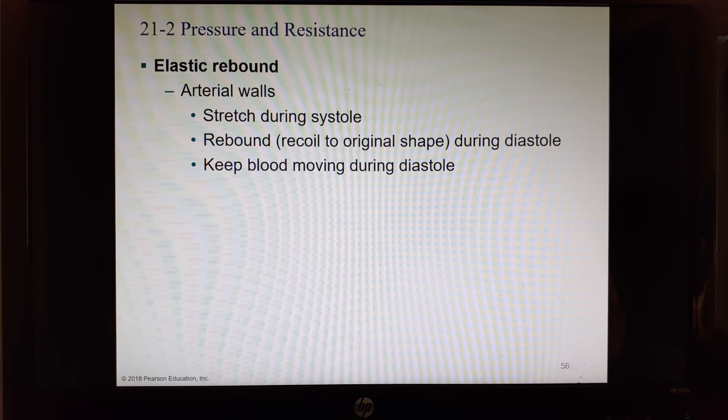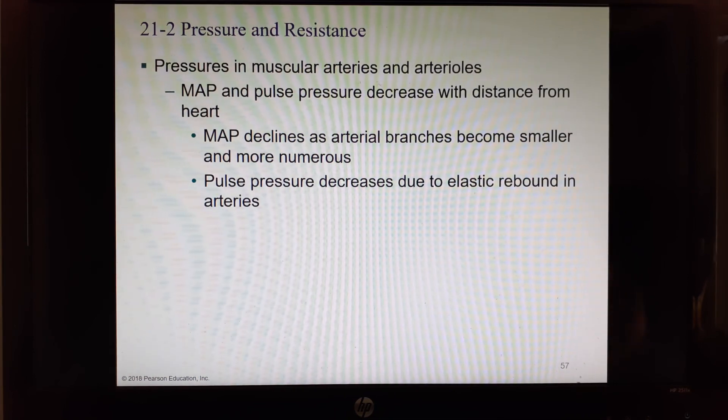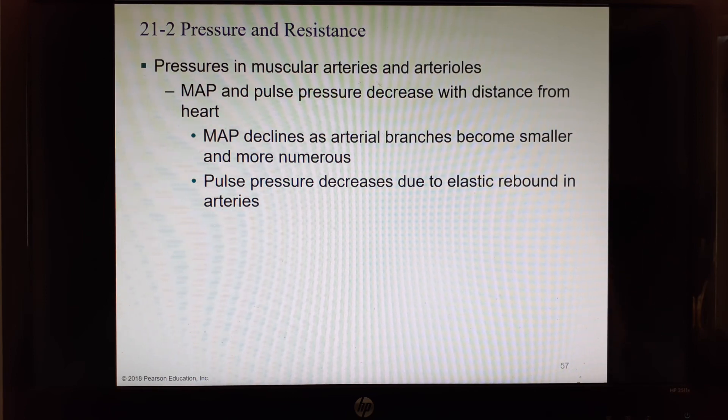Arterial walls we saw have lots of elastic tissue, so they will have elastic rebound. When blood pressure goes up, arterial walls are able to stretch a little bit. And then when the blood pressure drops, they snap back. This actually helps smooth out blood flow so that it doesn't come in spurts. It keeps the blood moving during diastole and smooths out the pressure. So the farther we get away from the heart, the less pressure waves we experience. Your mean arterial pressure and pulse pressure decrease the farther you get away from the heart. Mean arterial pressure declines as the branches become smaller and more numerous. Pulse pressure drops because of elastic rebound.